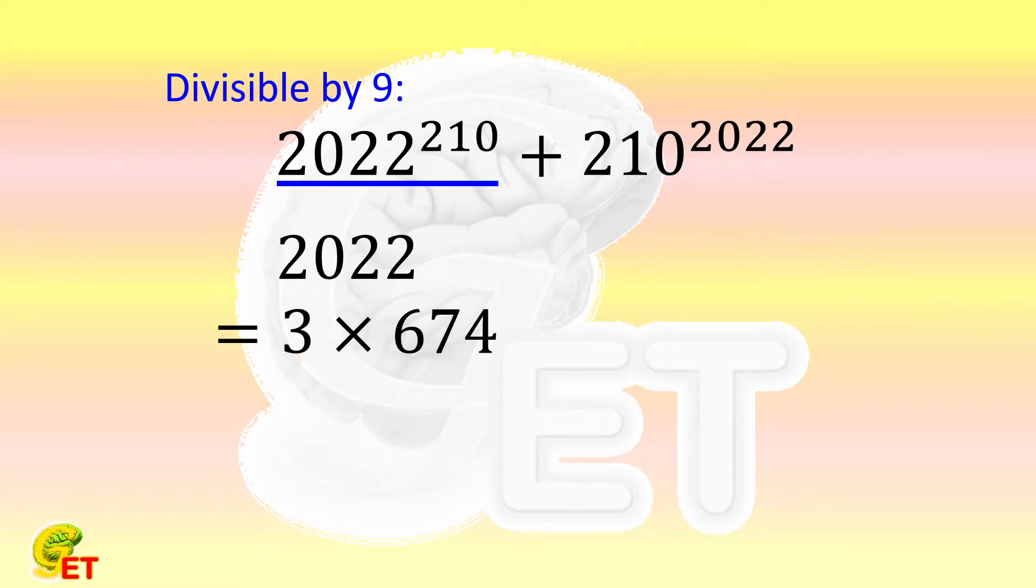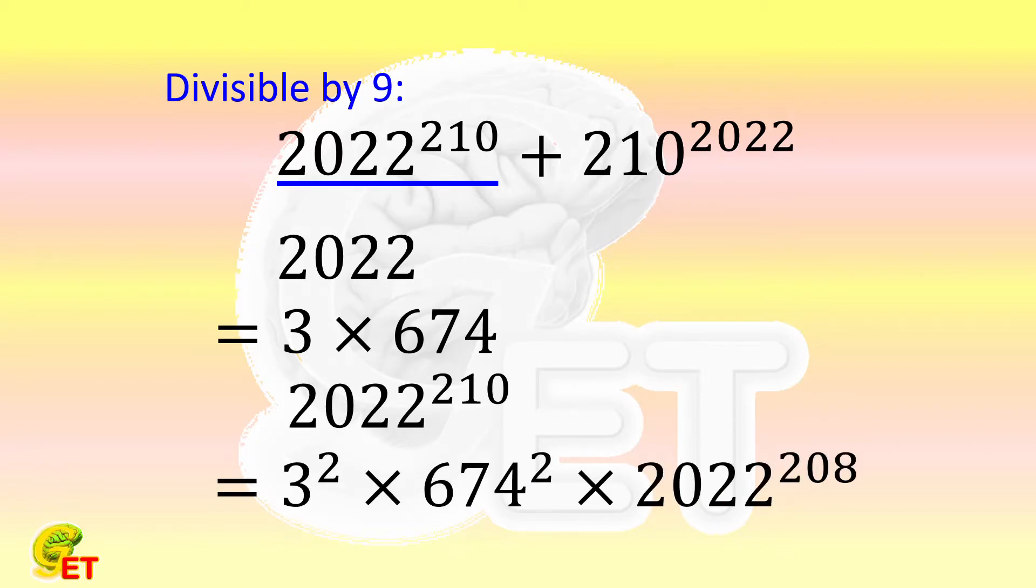That's enough because 2022 to the 210th power can be written as 3 to the second power times 674 to the second power, multiplied by 2022 to the 208th power. So the first term is divisible by 9.